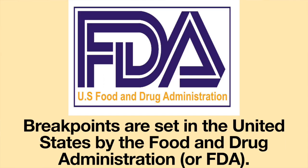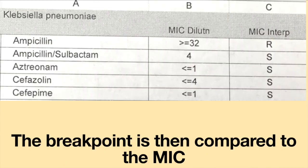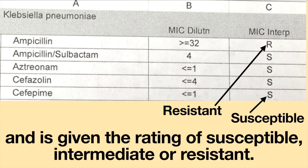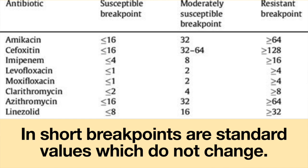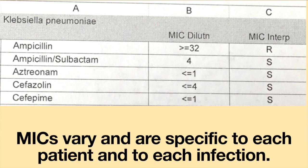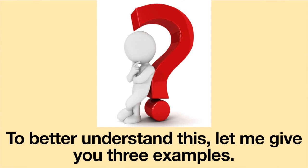Breakpoints are set in the United States by the Food and Drug Administration, or FDA. The breakpoint is then compared to the MIC and is given the rating of susceptible, intermediate, or resistant. In short, breakpoints are standard values which do not change. MICs vary and are specific to each patient and to each infection.